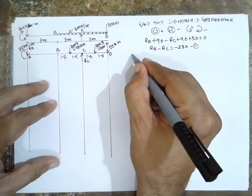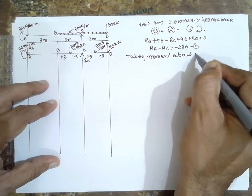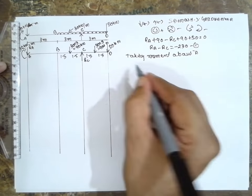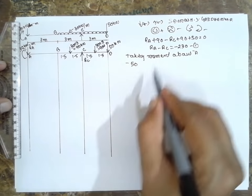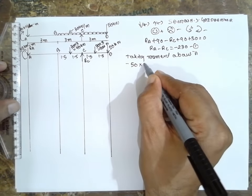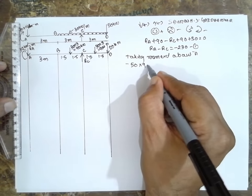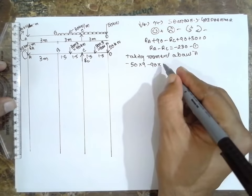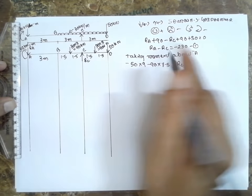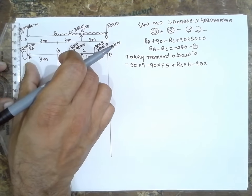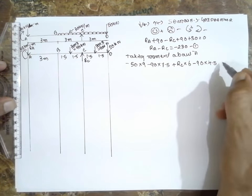Taking moment about A: the couple is 30. Then minus 50 into distance 9, because it is clockwise. Minus 90 into 7.5, plus RC into 6, minus 90 into 4.5, and the couple clockwise is minus 30, all equal to zero.